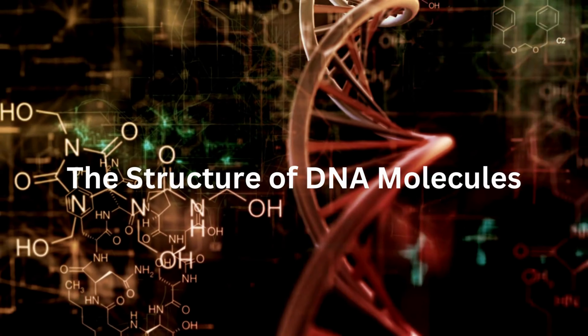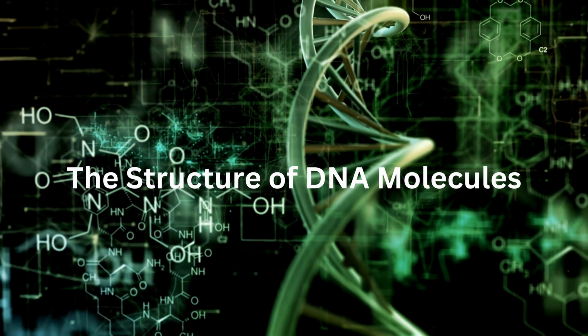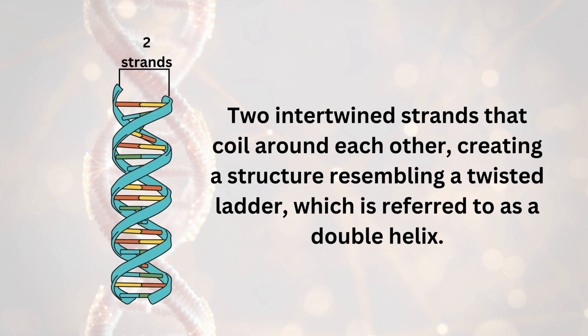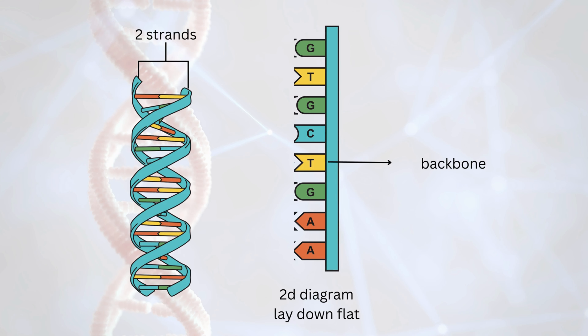The structure of DNA molecules: DNA is two intertwined strands coiled around each other, creating a structure resembling a twisted ladder, which is referred to as a double helix. Looking at the other half of the DNA flattened, the green one is called the backbone, where it holds the nitrogen bases.